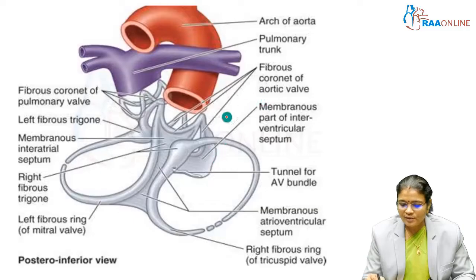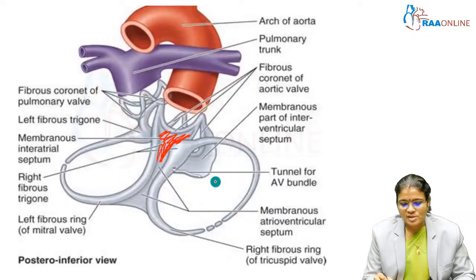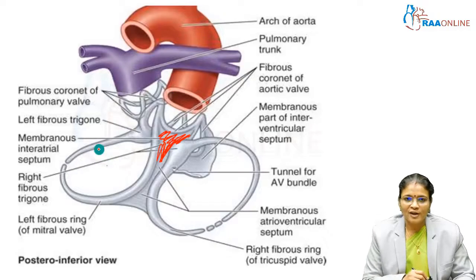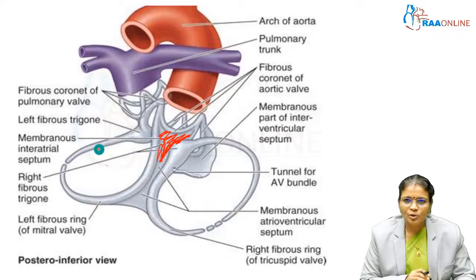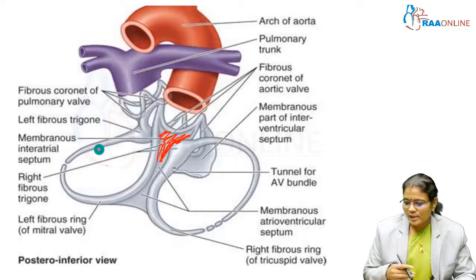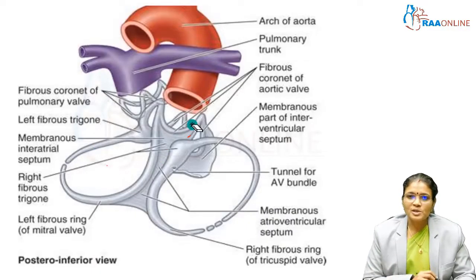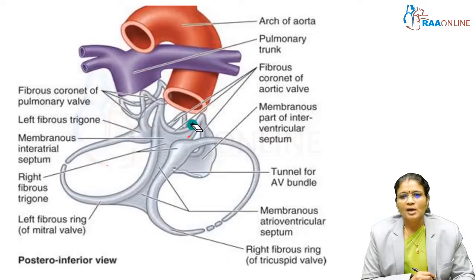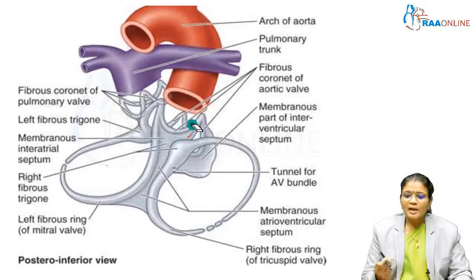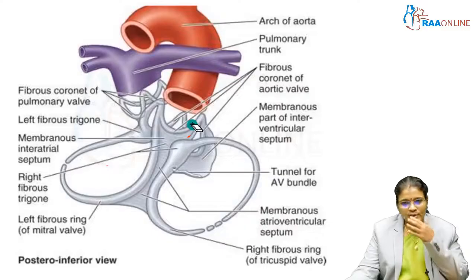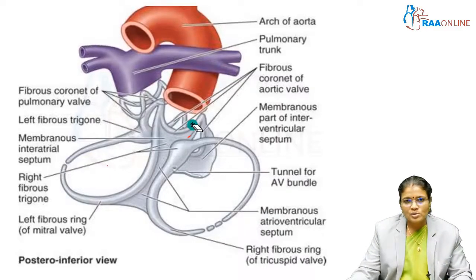The right fibrous trigone is present between the aortic orifice and the right tricuspid orifice. The left fibrous trigone is present between the aortic orifice and the mitral valve. These — the right fibrous trigone and left fibrous trigone — are all components of the fibrous skeleton of the heart. The right fibrous trigone is otherwise called trigonum fibrosum dextrum, and the left fibrous trigone is otherwise called trigonum fibrosum sinistrum.